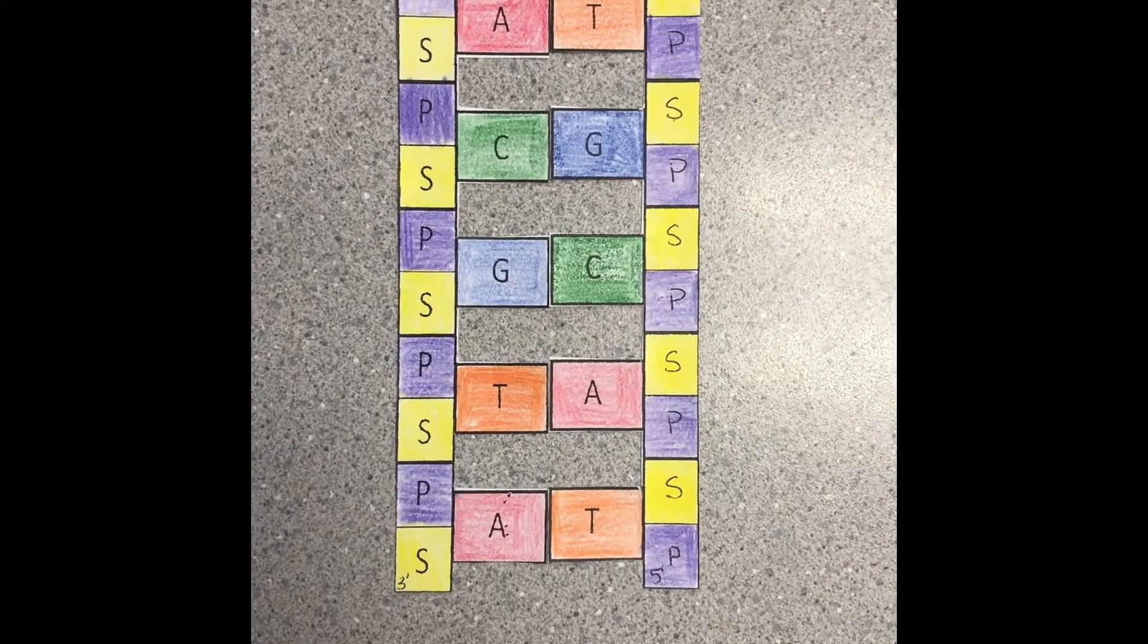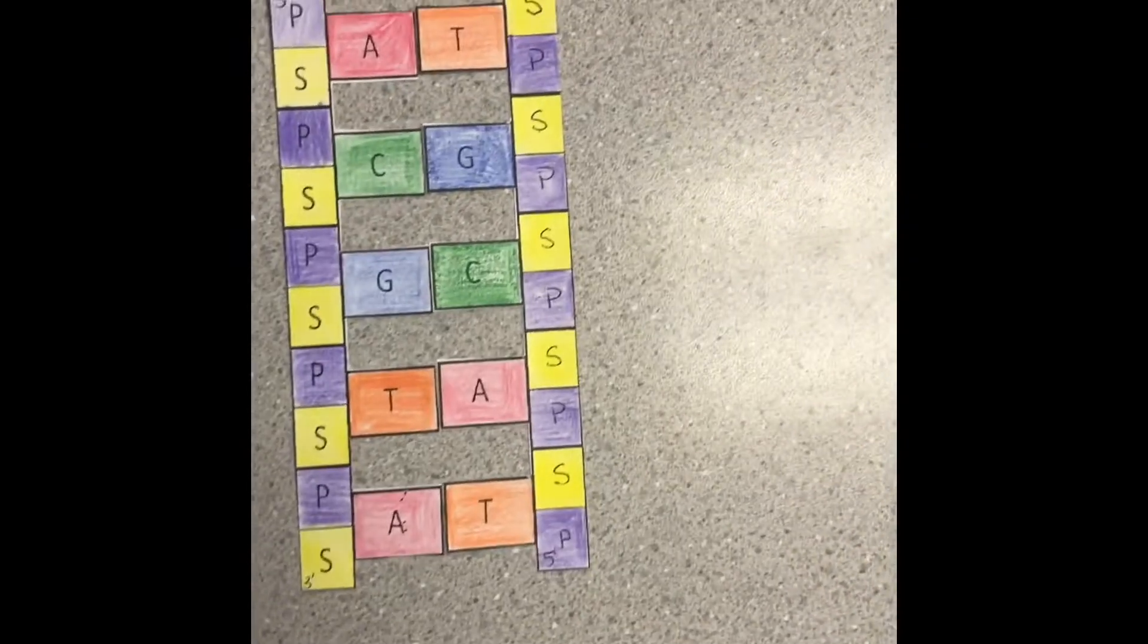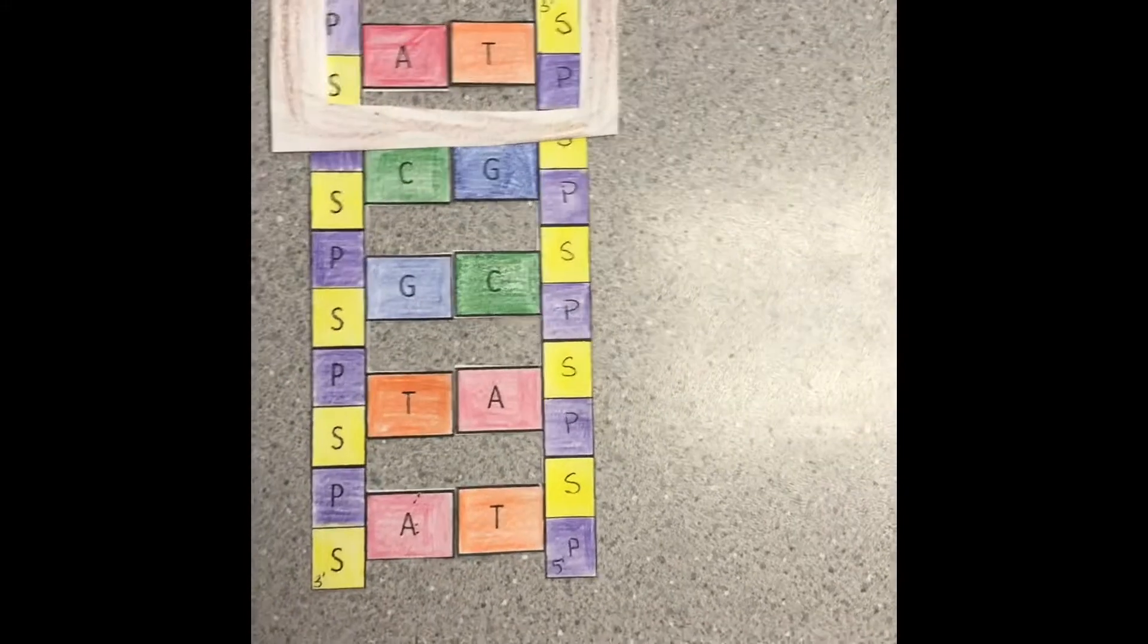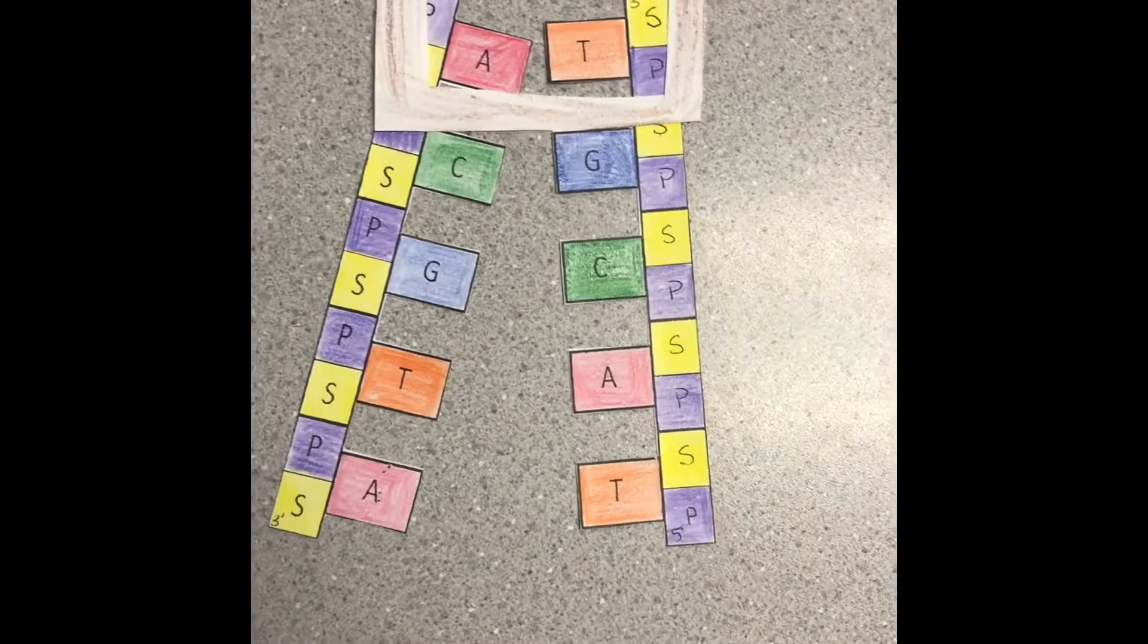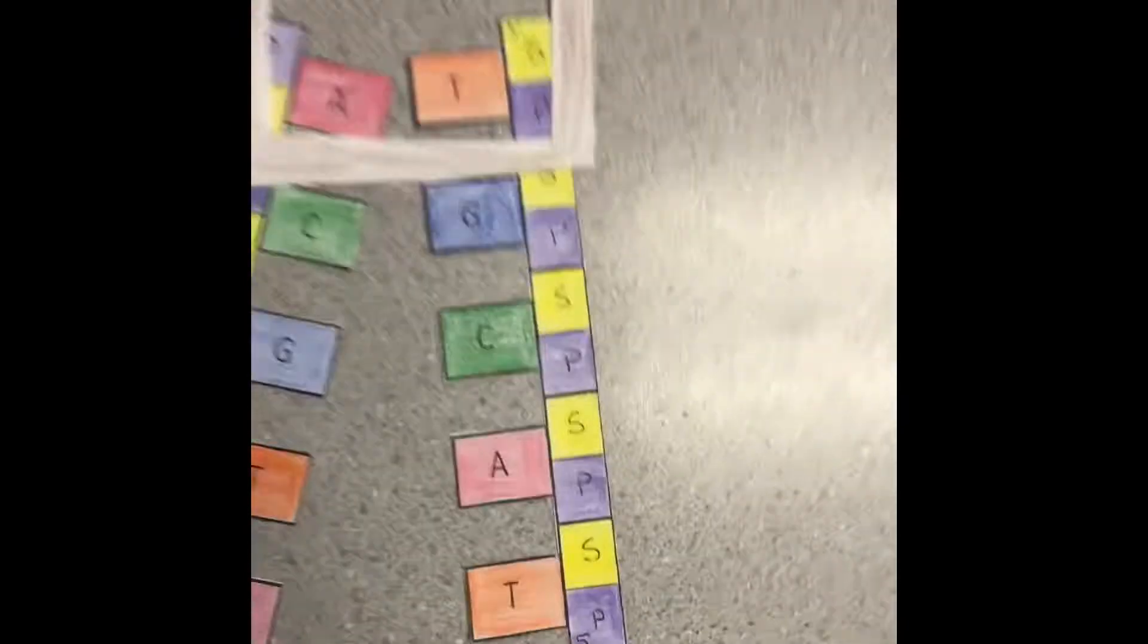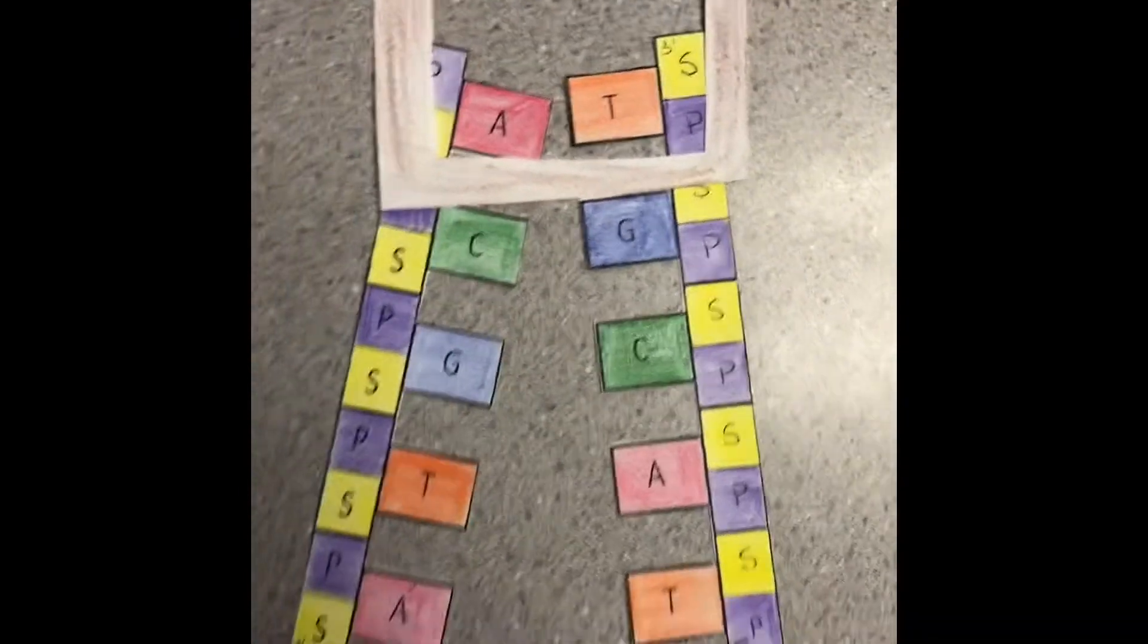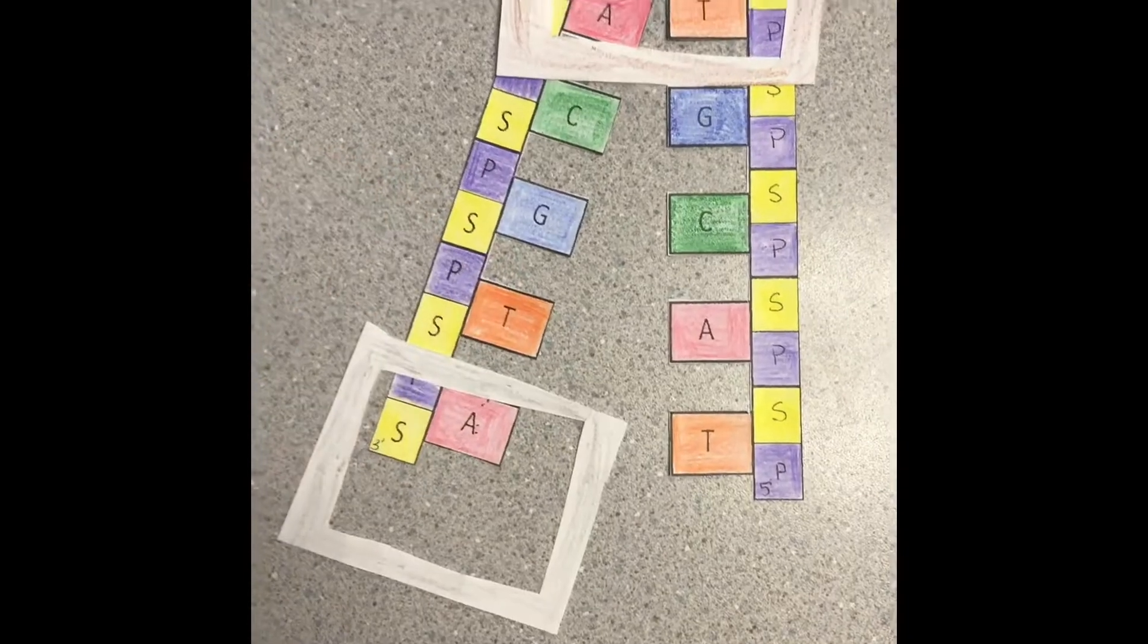This is a DNA strand. Helicase unwinds the DNA strand. While it is unwinding, it gets tight at the end, so topoisomerase breaks it to relieve that.